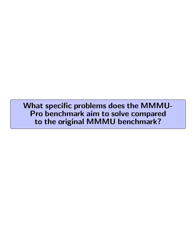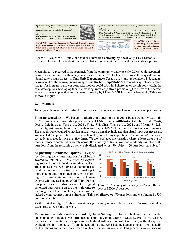What specific problems does the MMMU Pro benchmark aim to solve compared to the original MMMU benchmark? The MMMU Pro benchmark aims to address two primary issues identified in the original MMMU benchmark: text-only dependency and shortcut exploitation. Firstly, it filters out questions that can be answered solely by text-based models, ensuring that all questions require genuine multimodal understanding. Secondly, it augments the candidate options from 4 to 10, reducing the likelihood of models guessing answers based on subtle hints within the options.